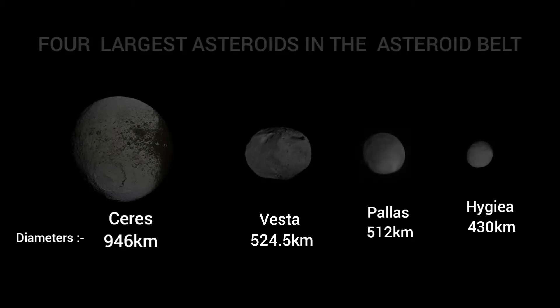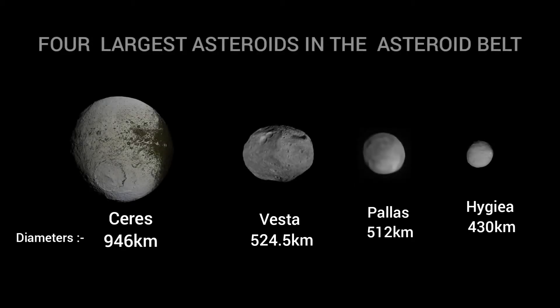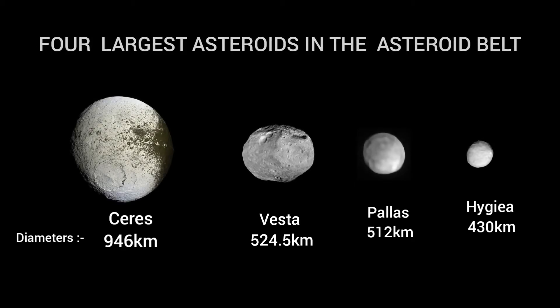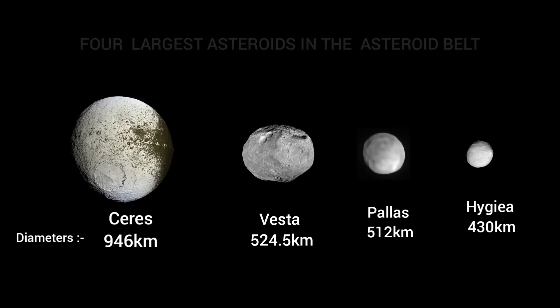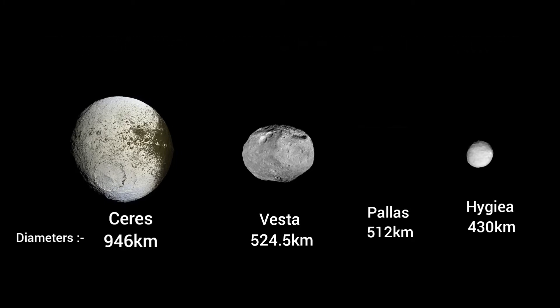The majority of the asteroid belt's mass is contained in the four largest asteroids: Ceres, Vesta, Pallas, and Hygieia.